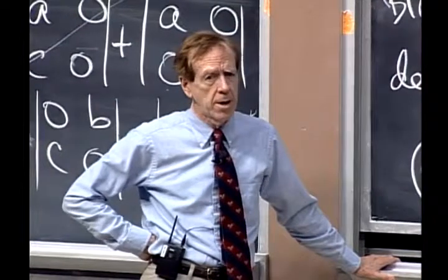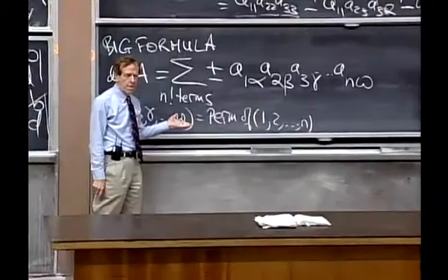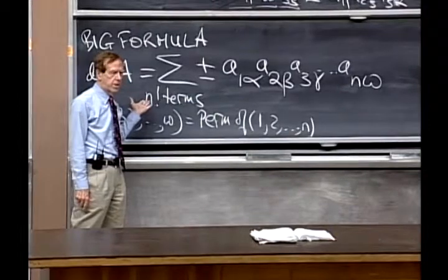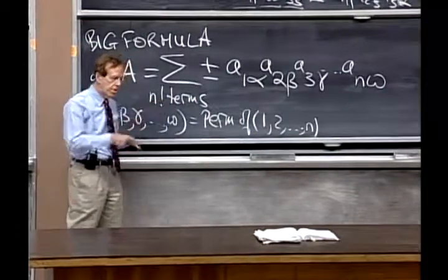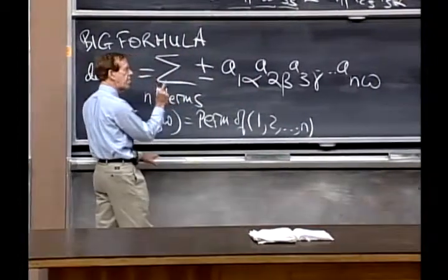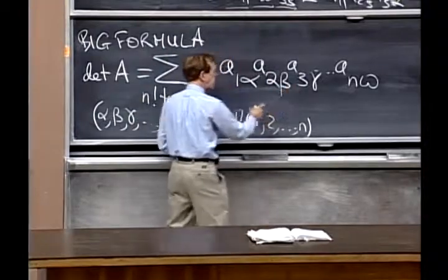You see it, right? Because almost all the terms are zeroes. Which term isn't zero if A is the identity matrix? Almost all the terms are zero because almost all the A's are zero.